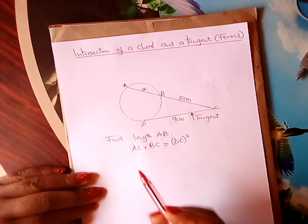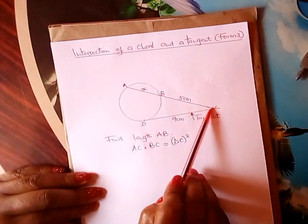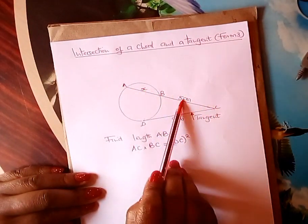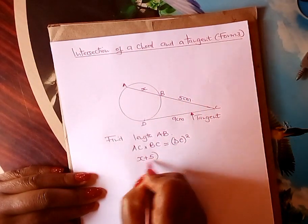And therefore from there you get your AC. What is your AC learner? AC is X plus 5. So you write it down: X plus 5.